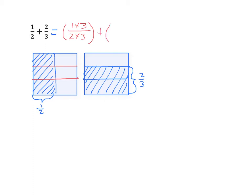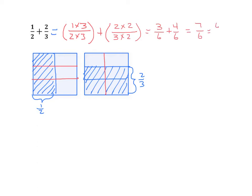Now we're going to do the other addend. We see that we are going to split each portion into two parts — the same as our denominator on the other side. Let's rewrite that fraction: 2 thirds. We split each one of those thirds into two separate portions, so both the numerator and the denominator are multiplied by 2. That becomes 3 sixths plus 4 sixths. Now that we have like units, we can add: that is 7 sixths. We can decompose that 7 sixths into 6 sixths plus 1 sixth, which equals 1 plus 1 sixth, which equals 1 and 1 sixth.